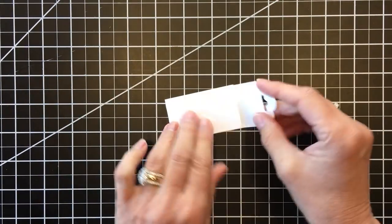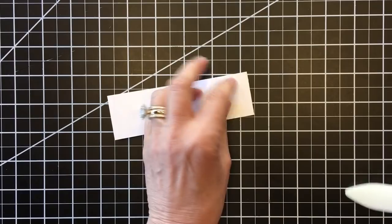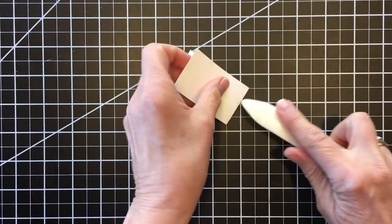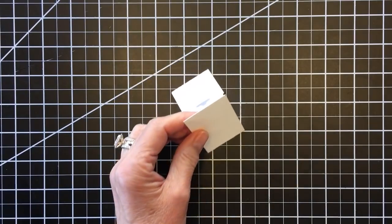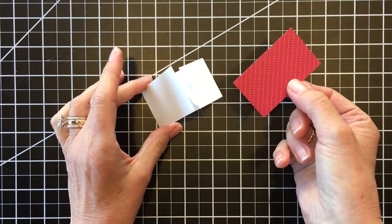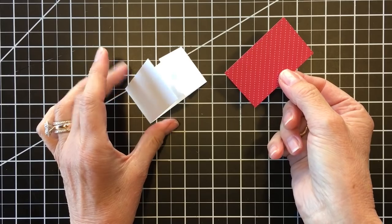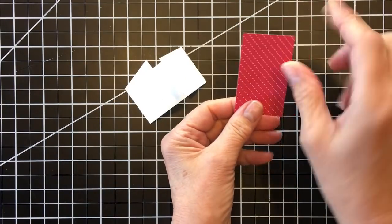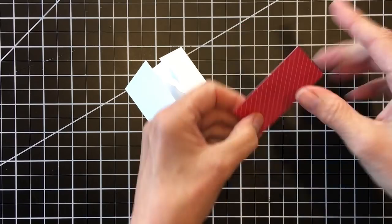On the opposite side, I'm going to use my bone folder to get a crisper crease. And then I've cut a different piece of designer series paper. I thought we'd do it a little bit differently this time. This is cut to 1 and 1/2 by 2 and 1/2. That's pretty simple.